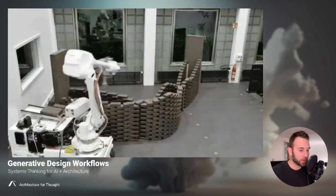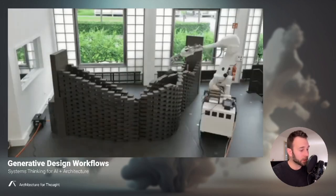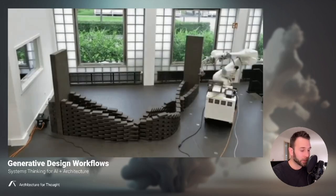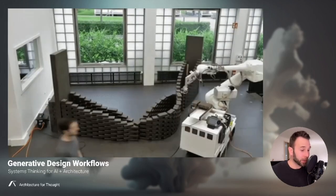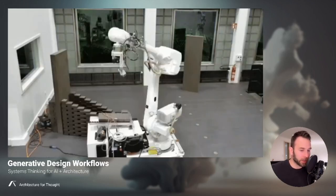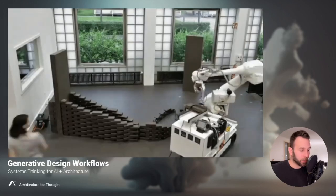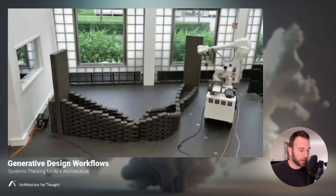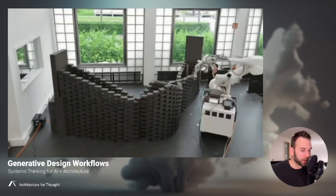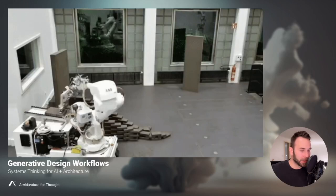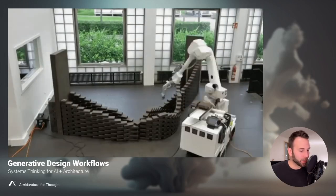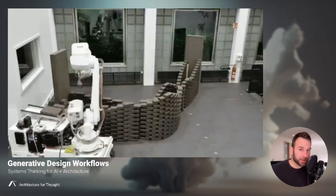Another approach is to jump straight into toolpath generation using ChatGPT for 3D printing. But when I asked it to generate G-code for a toolpath for a 3D printed dome structure with a radius of 10 feet and a height of 10 feet, it basically told me not yet — slow down.